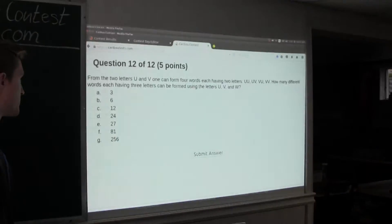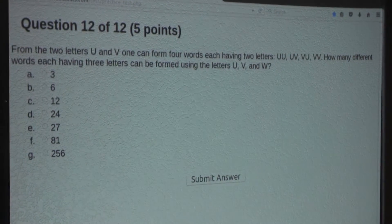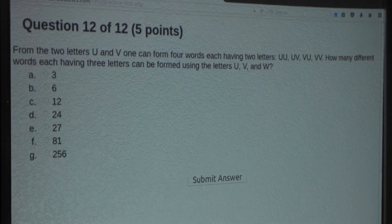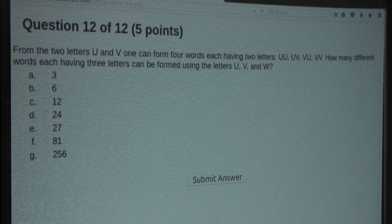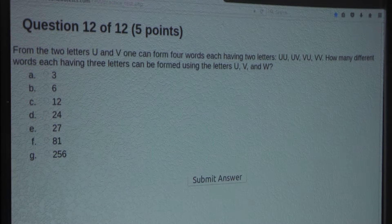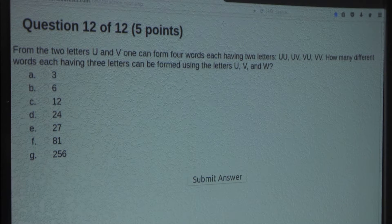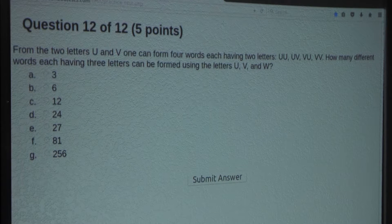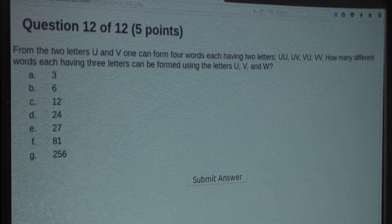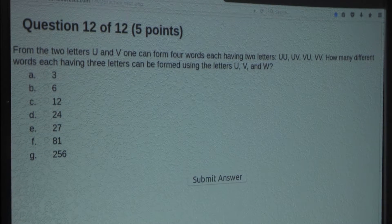So the question is, from the two letters U and V, one can form four words each having two letters: UU, UV, VU, and VV. How many different words each having three letters can be formed using the letters U, V, and W?